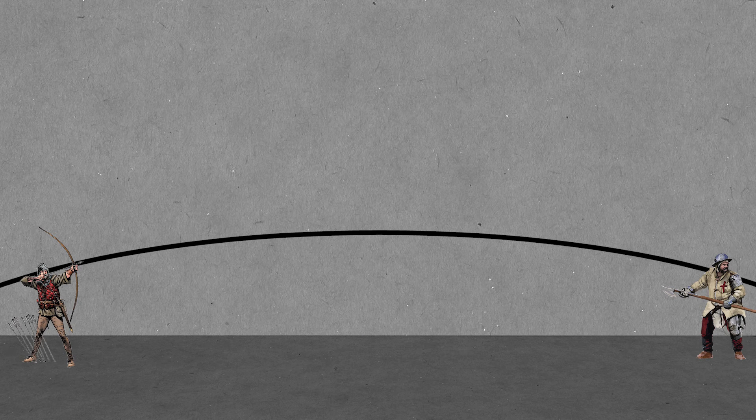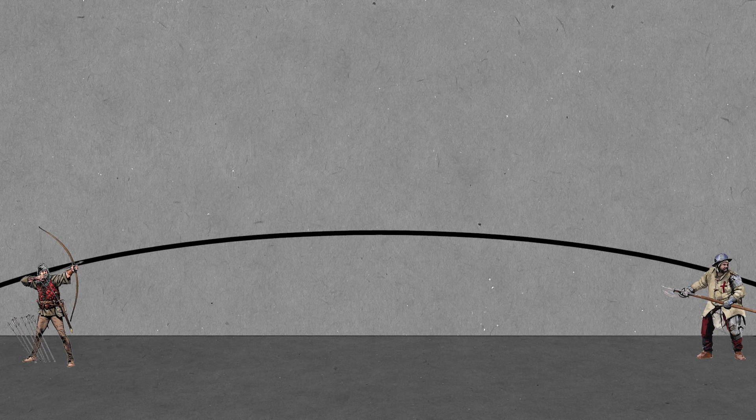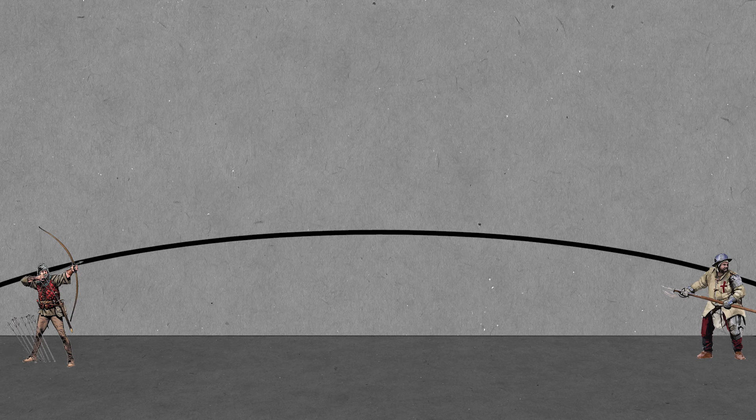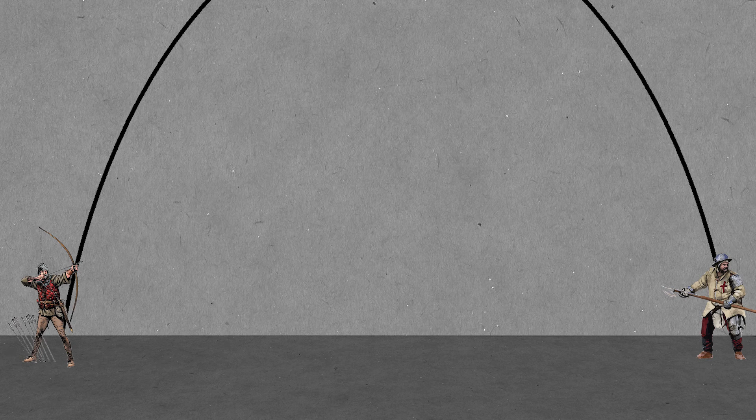Now, theoretically, there's two paths that this arrow could take: a direct path and an indirect path. The direct path is the flattest trajectory. However, it is still a parabola. And the indirect path is an arcing trajectory that falls down onto the target.